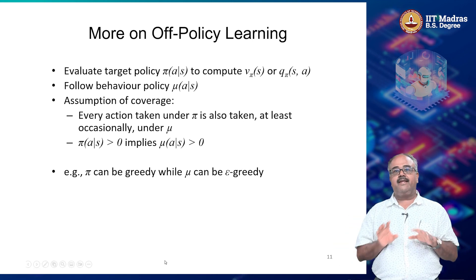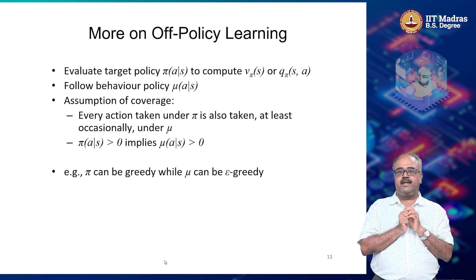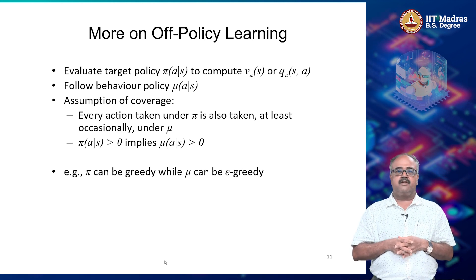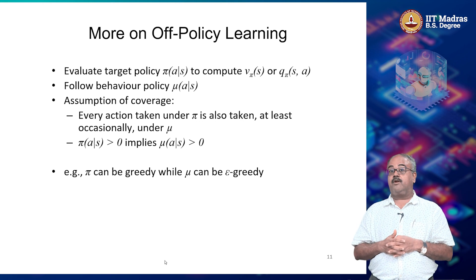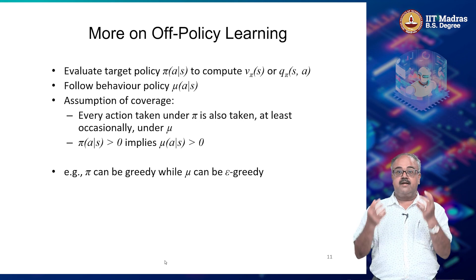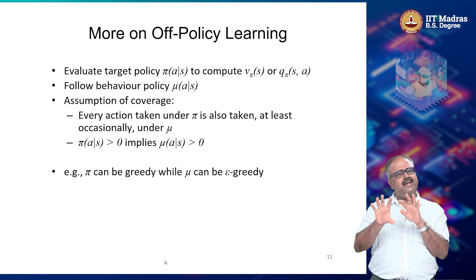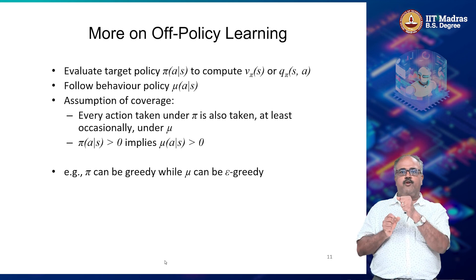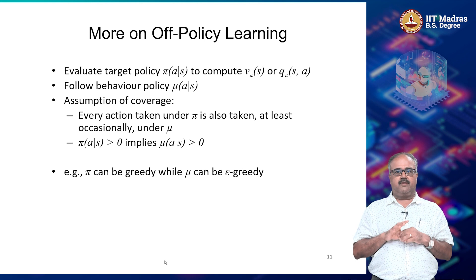In the Q-learning case, it was the greedy policy that we are trying to evaluate, but epsilon-greedy policy or some other random policy that we are using for drawing samples. That is why it is called off-policy. There is a very specific instance from the same Q function: there is a greedy policy versus an epsilon-greedy policy.